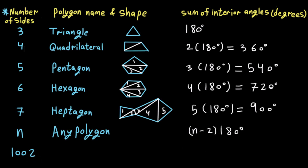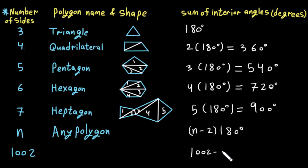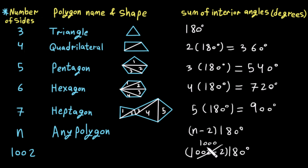We can even calculate the sum of interior angles of a 1002-sided polygon. We just substitute n = 1002 into the formula: (1002 − 2) × 180 degrees = 1000 × 180 degrees = 180,000 degrees.